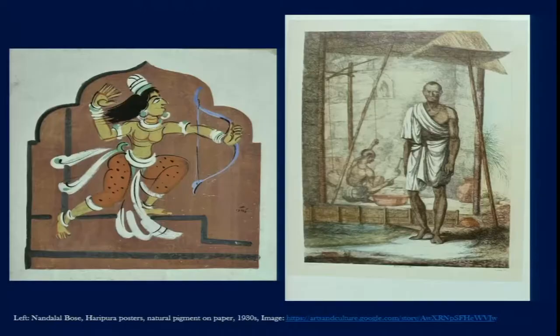We also see that the material used for making these images was strategic. Natural pigment was used for each and every one of these images — this opaque natural pigment used with lime to give opacity and depth to the colors.